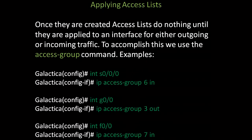Let's take a look at applying access lists. Once they are created, access lists do nothing until they are applied to an interface for either outgoing or incoming traffic. To accomplish this, we use the access-group command. In the first example, select the first serial port on a router, S0/0/0. Once in interface configuration mode, use ip access-group, the number of the access list, and specify in or out. In the next example, selecting G0/0, apply list 3 with ip access-group 3 out for outbound. Finally, selecting a fast ethernet interface 0/0, use ip access-group 7 in for inbound traffic.